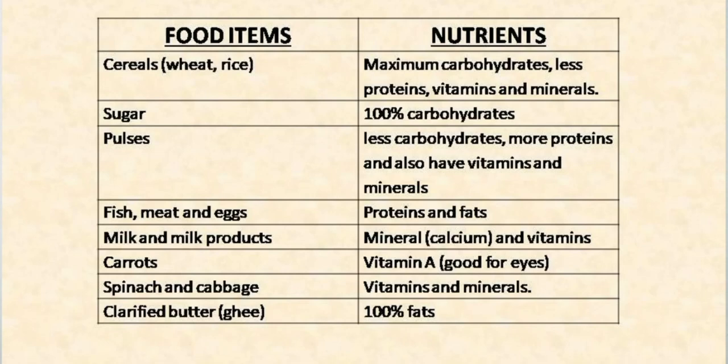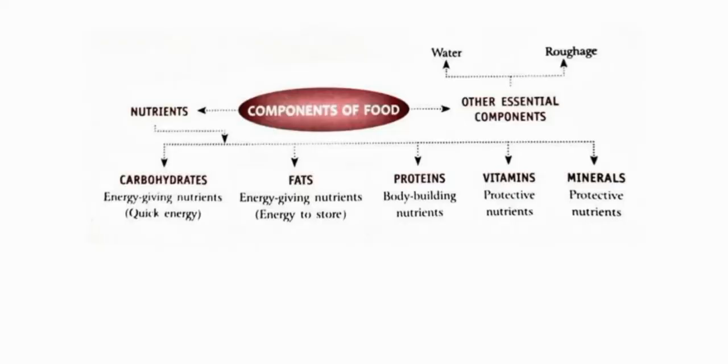Milk and milk products are rich in the mineral calcium, which is good for bones and teeth. Carrot is rich in Vitamin A, which is good for eyes. Spinach and cabbage are rich in vitamins and minerals. Clarified butter — ghee, butter, or oil — contains 100% fats. To recap: carbohydrates and fats are called energy-giving food, proteins are body-building food, and vitamins and minerals are called protective foods.